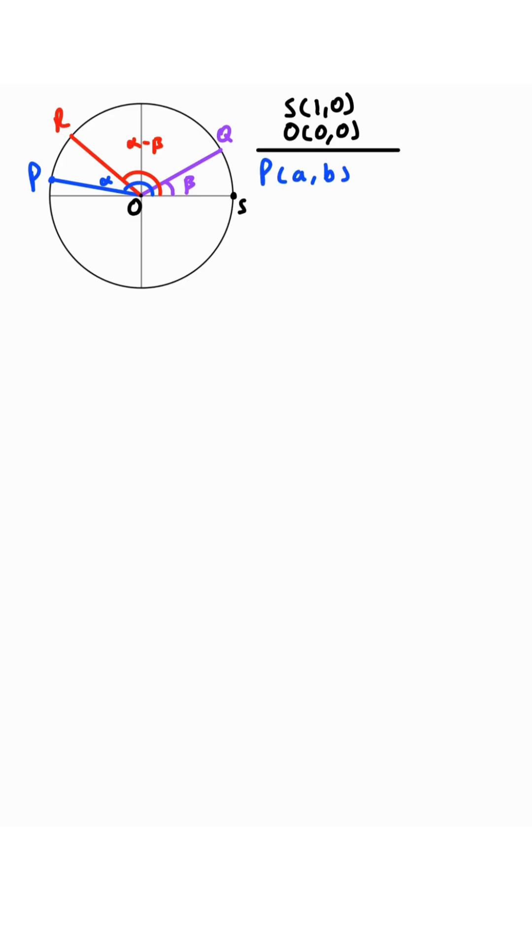Now, suppose P is located at (a,b). Since this is the unit circle, sine of alpha is equal to b, cosine of alpha is equal to a. By the Pythagorean identity, sine squared of alpha plus cosine squared of alpha is equal to 1, and using a's and b's, we get b squared plus a squared is equal to 1.